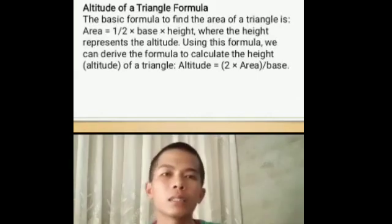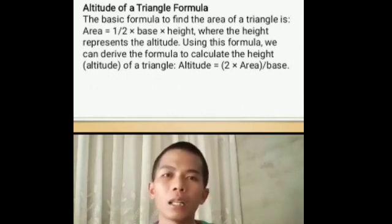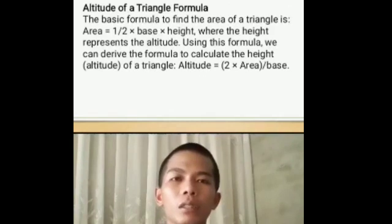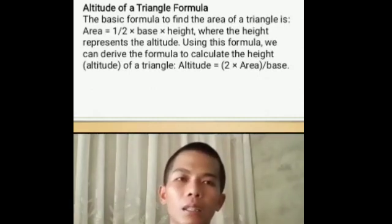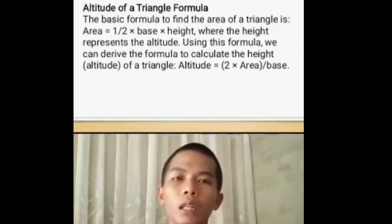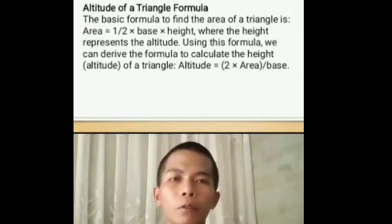In an obtuse triangle, the segment YZ will be extended and the vertex X will make a straight line going downward to touch the extended segment, creating an altitude of 90 degrees. The basic formula to find the area of a triangle is: Area equals one-half times base times height, where height represents the altitude. Using this formula, we can derive the formula to calculate the height of a triangle: altitude equals 2 times area divided by base.